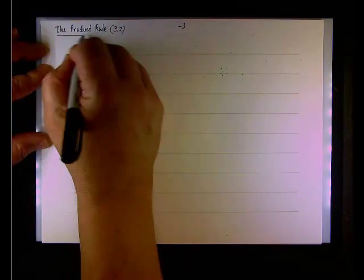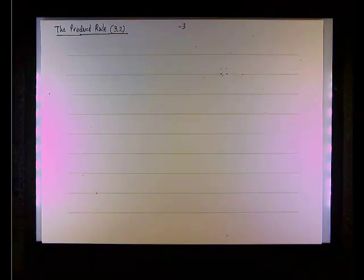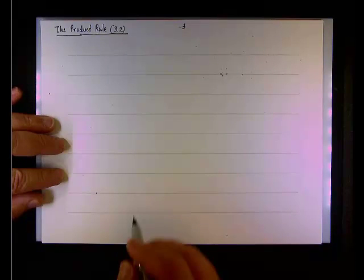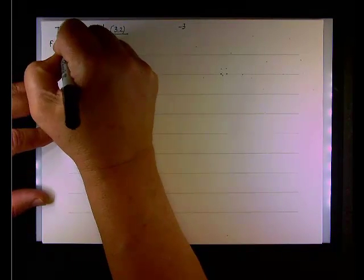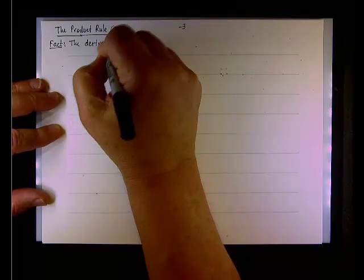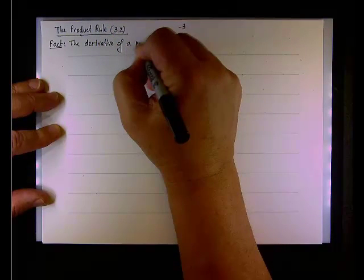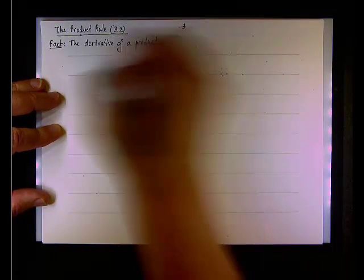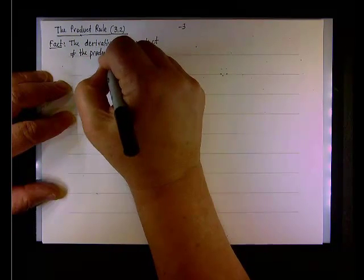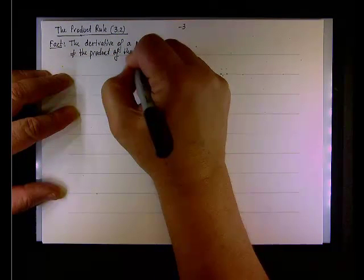Well, remember that the limit of a product is the product of the limit, so it's no surprise that Leibniz thought that if this is the case, then perhaps the derivative of a product is the product of a derivative. But a simple example can prove, can show you that this assumption is wrong. So, let's write first as a fact that the product, the derivative of the product, the derivative of a product is not equals to the product of the derivatives.